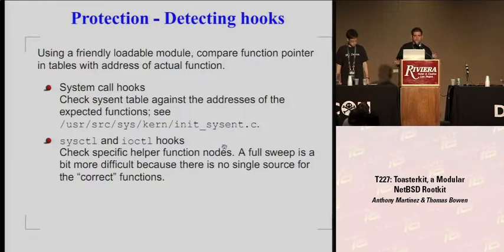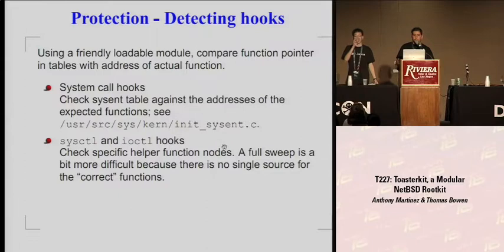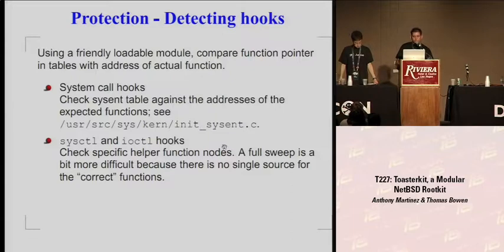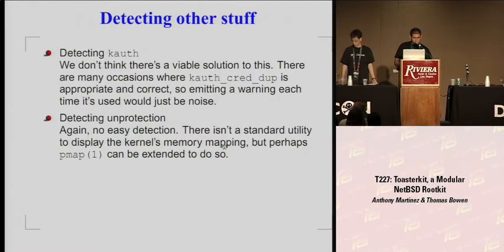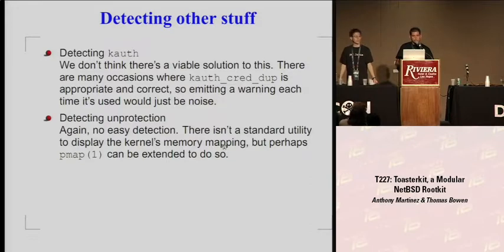However, it's an arms race with rootkits because they are now mostly starting to do a lot of hot patching in kernel. Basically you strip out all your code from the original function you're hooking, move that somewhere else in memory, and replace it with your hook function and run it like that. That is a bit more difficult to detect. Detecting kauth is pretty difficult because what we did with kauth is just a simple duplicate function that many other kernel functions use — an example is fork uses it very often. We're not doing anything special with it, so it would be very difficult to detect.